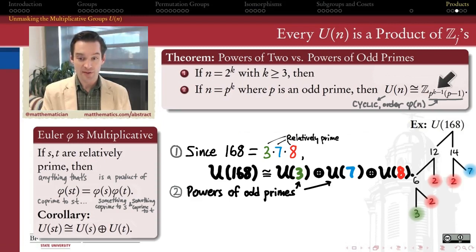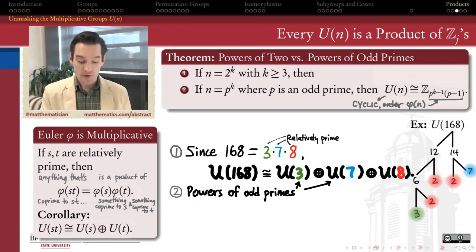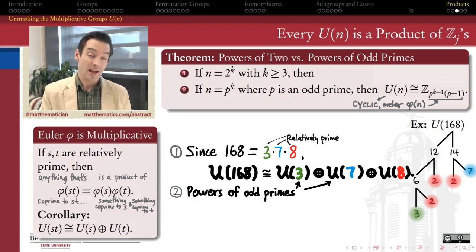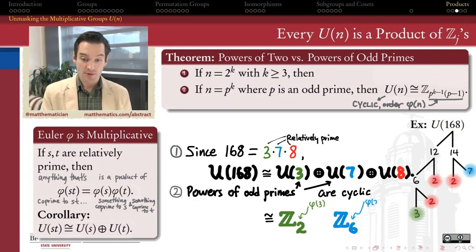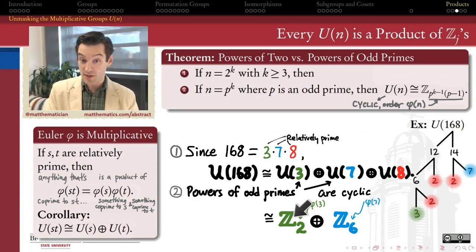Applying this fact to our classification: U(3) is a cyclic group and U(7) is a cyclic group, because 3 and 7 are powers of odd primes. Since 3 and 7 are prime, their orders are φ(3) = 2 and φ(7) = 6, respectively. Therefore U(3) is isomorphic to Z₂ and U(7) is isomorphic to Z₆.